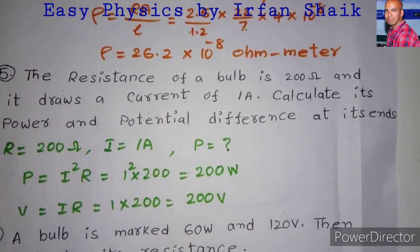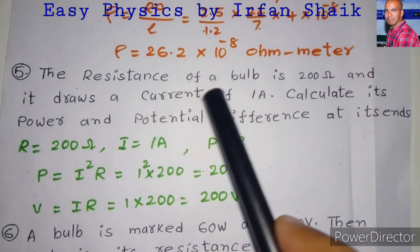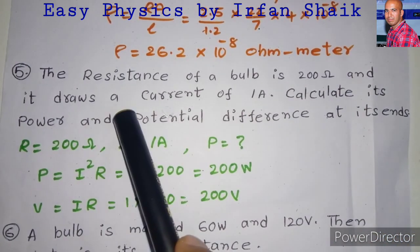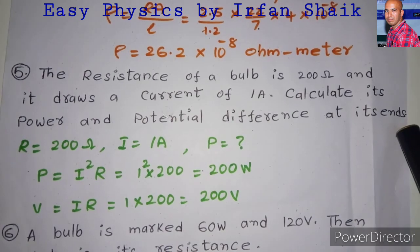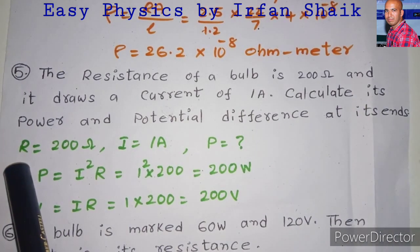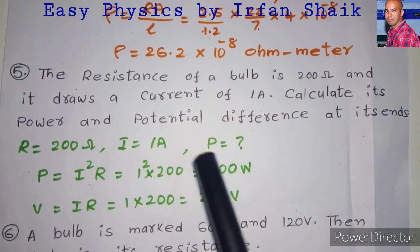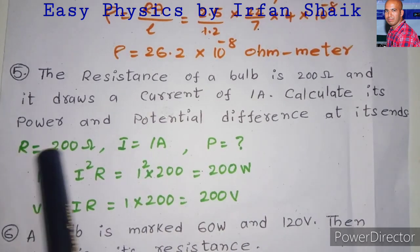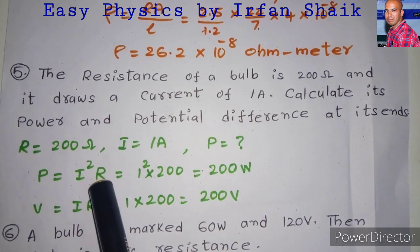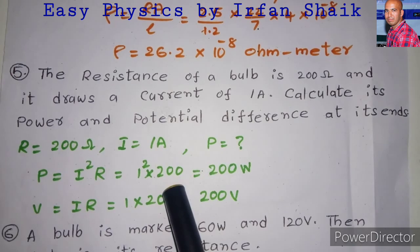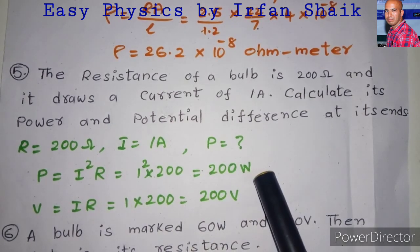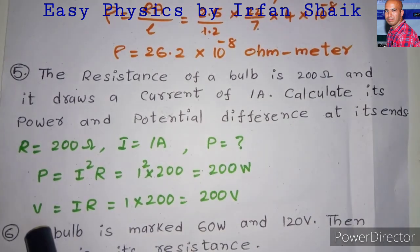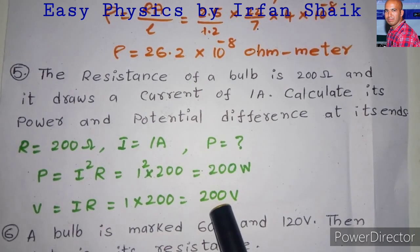Move to the fifth problem. The resistance of a bulb is 200 ohms and it draws a current of 1 ampere. Calculate its power and potential difference at its ends. Resistance is 200 ohms and current is 1 ampere. The formula is P equals I squared times R. By substituting and calculating, we get the answer as 200 watts. For potential difference, V equals I times R as per Ohm's law. By substituting, we get 200 volts.